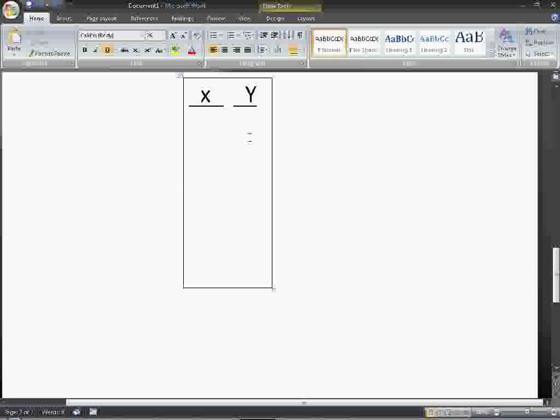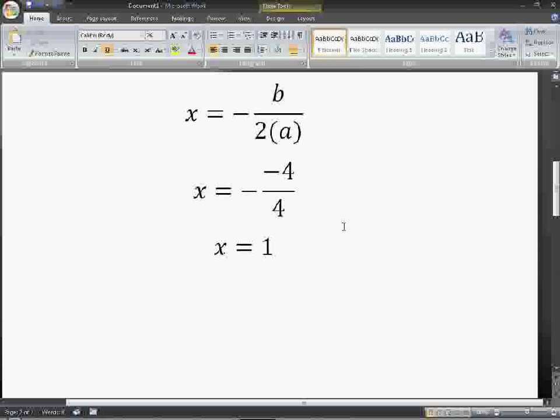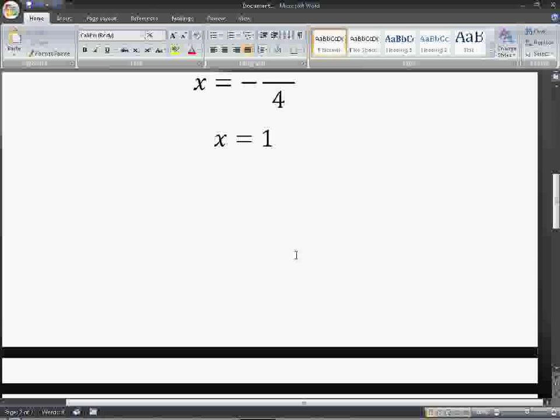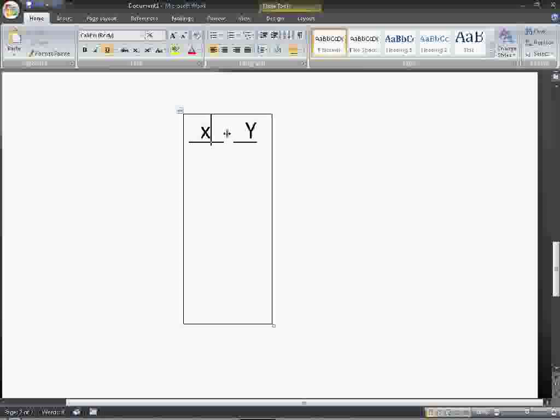Okay, now, in order to solve a quadratic function using graphing, you have to have a table like this one right here. Now, you're going to use your number that you found as the center, which is 1, and you're going to put it in the x column. So, 1, then you're going to go down 1, and put a 0, and then go down 1 again, and do negative 1.